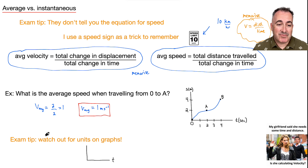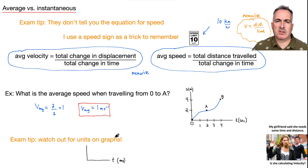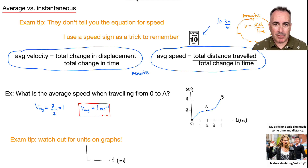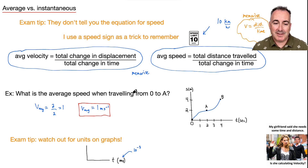Exam tip: watch out for units on graphs. Often when they give you a graph, there's something unusual about the units — they might say times ten to the minus six, or the time axis might be labeled ms. You might think 'meter seconds,' but time is not measured in meter seconds. ms means milliseconds, which is ten to the minus three seconds. The good news: you can look up prefixes in your data booklet — there's a list of all prefixes right at the front.